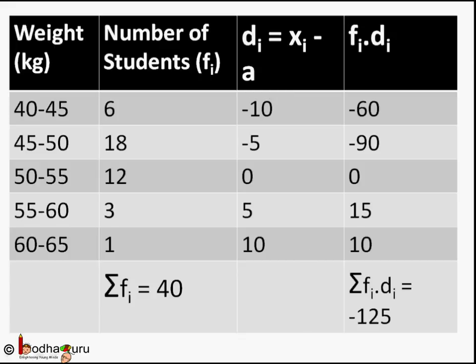Let us calculate fi di for all i. For the first row, 6 into minus 10 equals minus 60. 6 is the f1, d1 is minus 10. So 6 into minus 10 equals minus 60. For the second row, f2 into d2 equals 18 into minus 5, which is equal to minus 90, and so on.